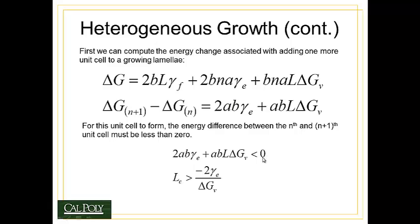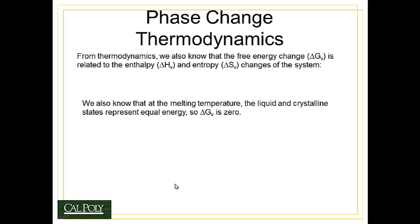That allows me to write the same equation as 2AB·γE + ABL·ΔGv is less than zero. If I solve this for L, I find there's a critical dimension Lc for the lamellae that must be greater than -2γE over ΔGv. It's the same thermodynamic term as we had with homogeneous nucleation, only in this case we're talking about the length of the lamellae in the C direction.